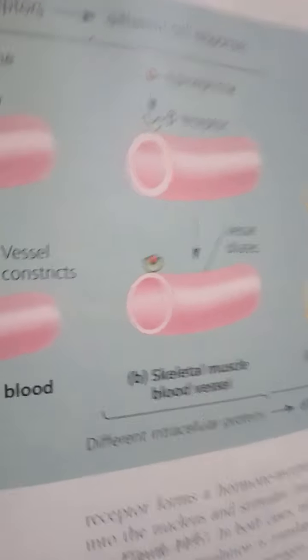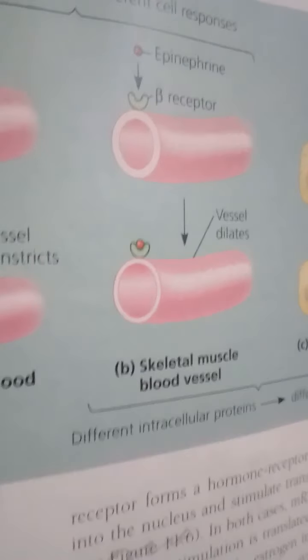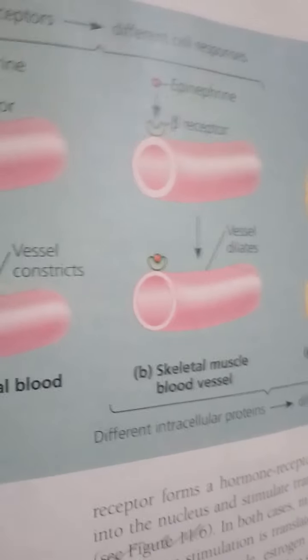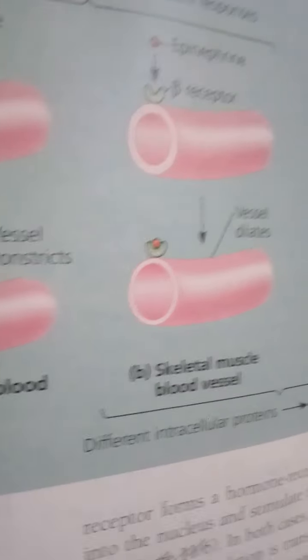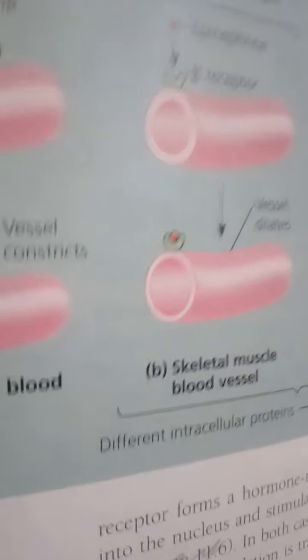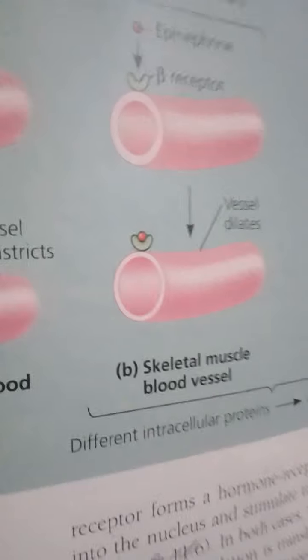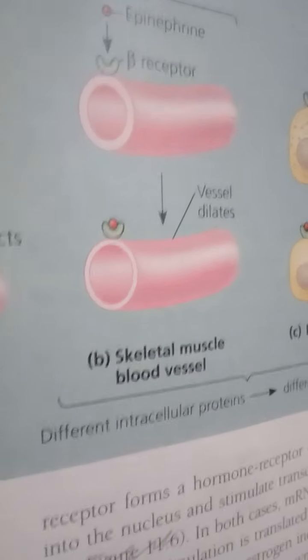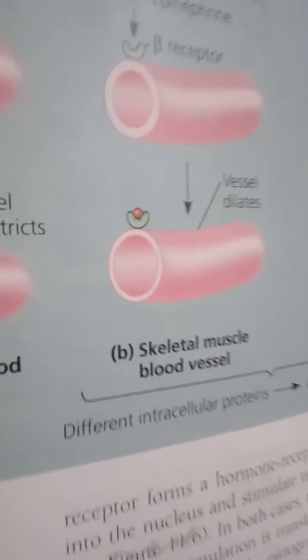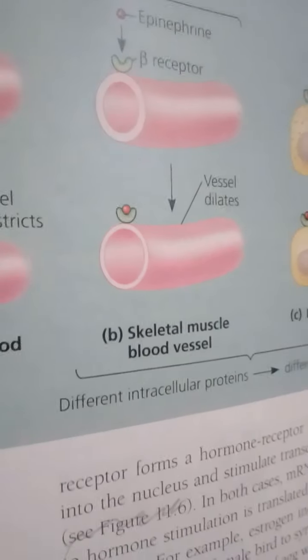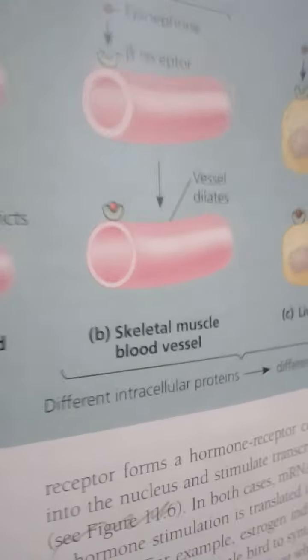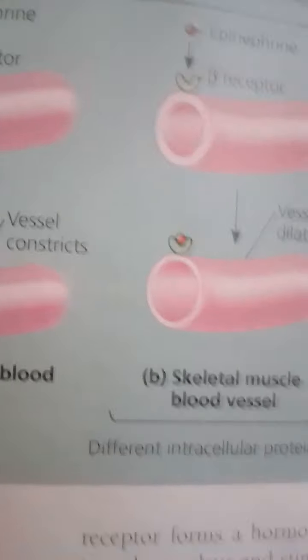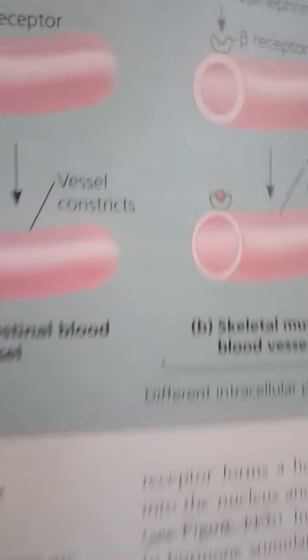The same hormone may also have different effects in different species. For instance, thyroxin produced by the thyroid gland regulates metabolism in humans and other vertebrates, but in frogs thyroxin has additional effects — it triggers the metamorphosis of a tadpole into an adult, stimulating resorption of the tadpole's tail and other changes.